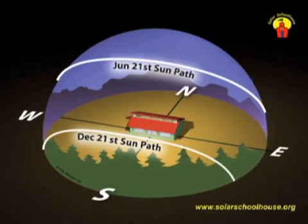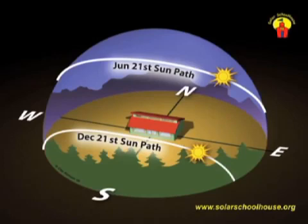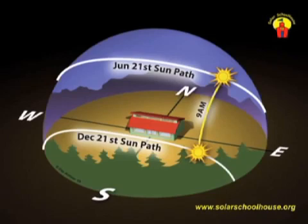We can now begin to chart where the sun will be at any time of day during the year at this location. At 9 in the morning on December 21st, the sun has risen in the east and is low in the southern sky. On June 21st, it's higher in the sky at this same time of day. We can draw a line on the sky dome between these two 9 a.m. positions — this line shows where the sun will be at 9 a.m. during the rest of the year. As the sun's path moves up and down through the seasons, the position of the sun at 9 a.m. will always be somewhere on this line.